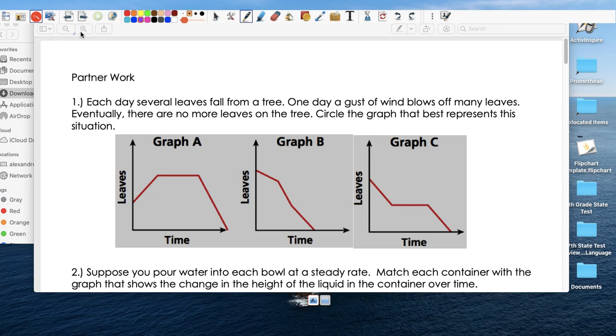So, we are describing graphs, and let's see if we can describe them properly. First one: each day several leaves fall from a tree. One day a gust of wind blows off many leaves. Eventually, there's no more leaves on the tree. Circle the graph the best. So, we start with a certain amount of leaves. This says if you're growing up, that the number of leaves increase. So right off the bat, I'm not even going to entertain that. This one had some leaves, just keeps falling off the tree, and then the gust of wind blows many. So notice that it's a little steeper, so that means more than the amount that was previously falling, falling now, there's many more, and then it falls down a little bit until there's no more. That makes sense. So I'm going to go for B for now.